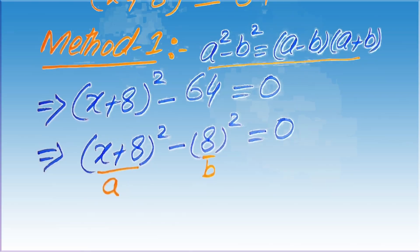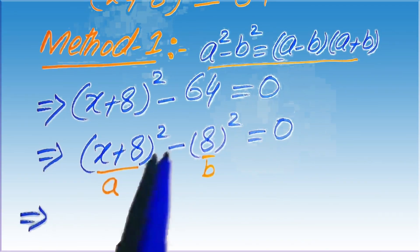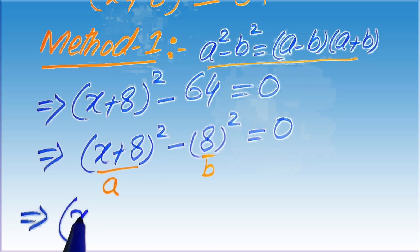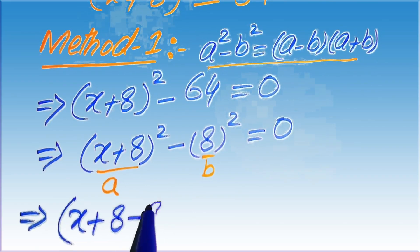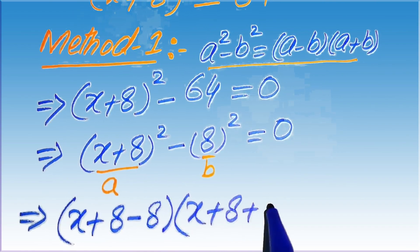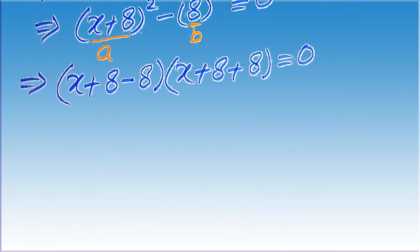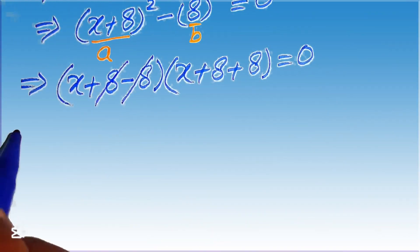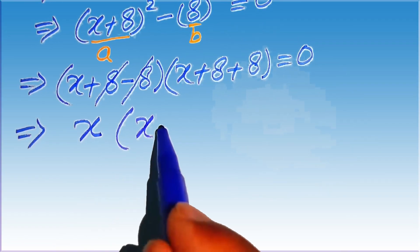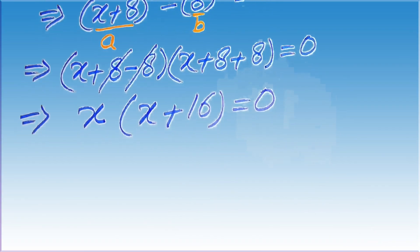Applying the difference of squares formula, we write: a minus b is x plus 8 minus 8, times a plus b is x plus 8 plus 8, equals 0. The minus 8 and plus 8 cancel out, leaving x, and x plus 8 plus 8 gives x plus 16, so we have x times x plus 16 equals 0.